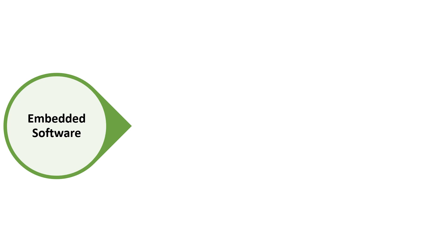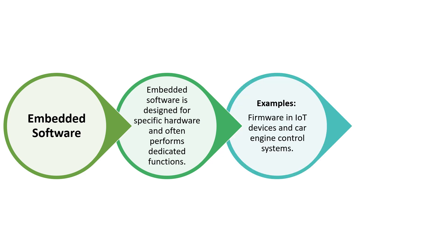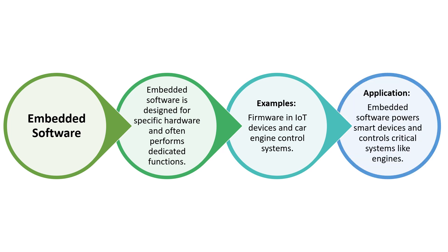Next is embedded software. This is designed for specific hardware and often performs dedicated functions — such as firmware, Internet of Things devices, and car engine control systems. Embedded software powers smart devices and controls critical systems like engines.